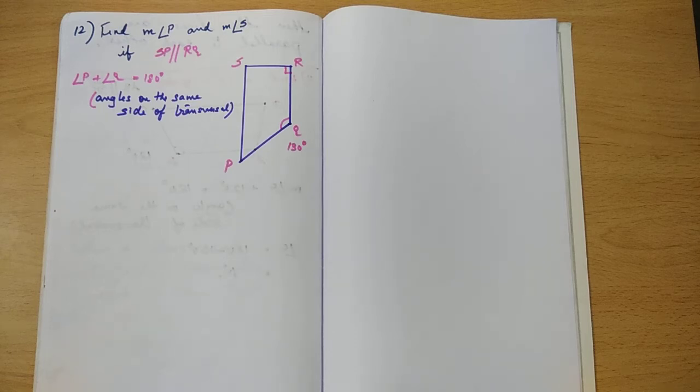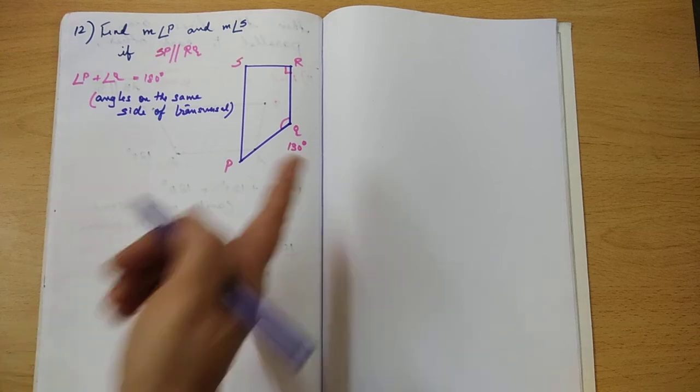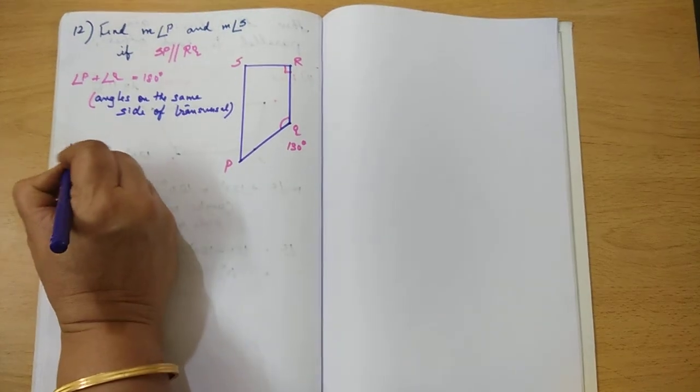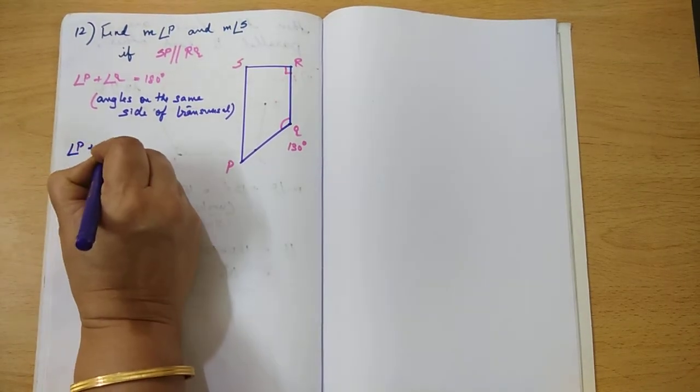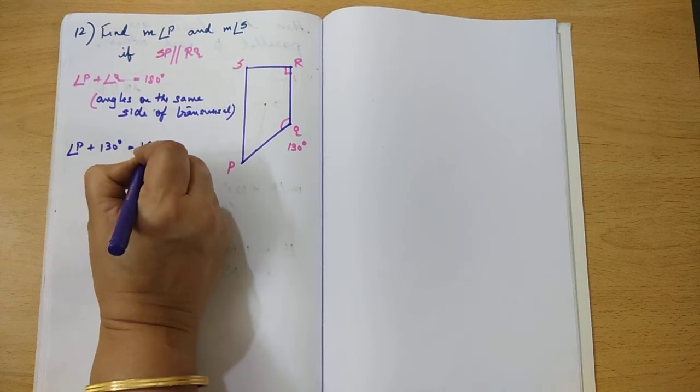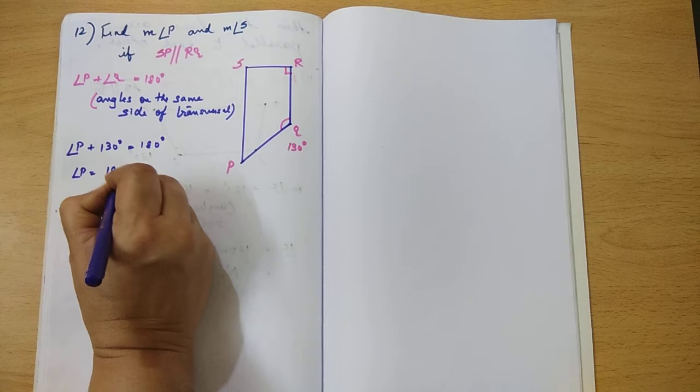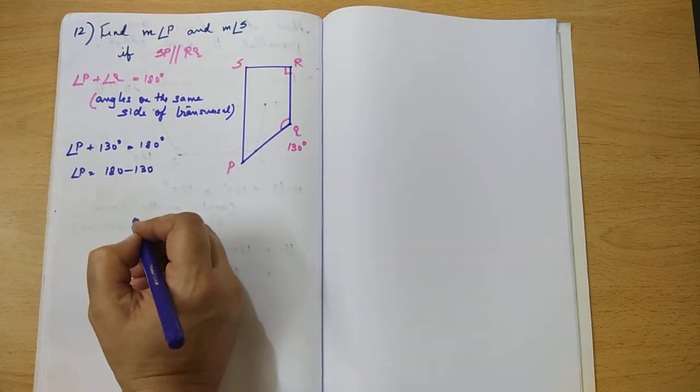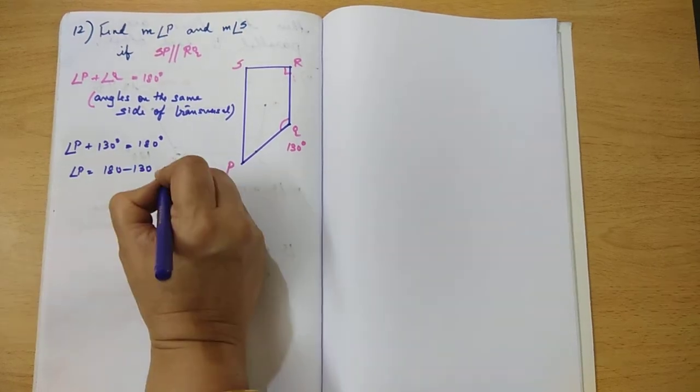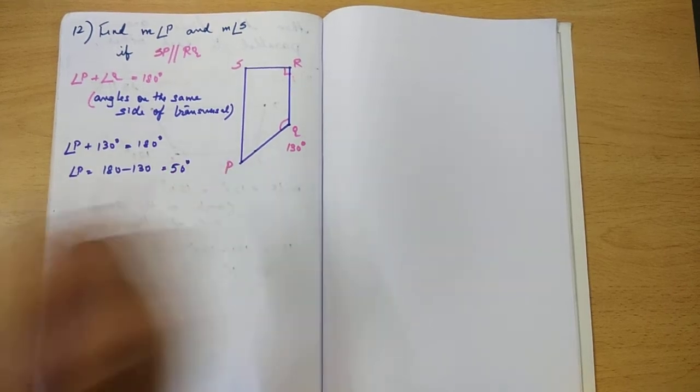You should write the reason as angles on the same side of the transversal. So now can we find angle P? Yes, because we know angle Q. Angle P plus 130 is equal to 180 or angle P is equal to 180 minus 130 which is 50 degrees. So we have found angle P.